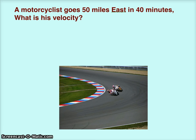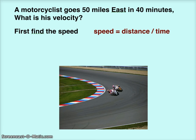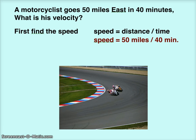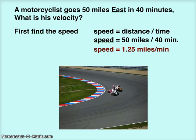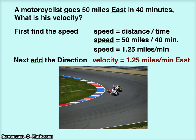A motorcyclist goes 50 miles east in 40 minutes. What is his velocity? First, find the speed. Speed equals distance divided by time, so speed equals 50 miles divided by 40 minutes. Speed equals 1.25 miles per minute. Next, add the direction. Velocity equals 1.25 miles per minute east.